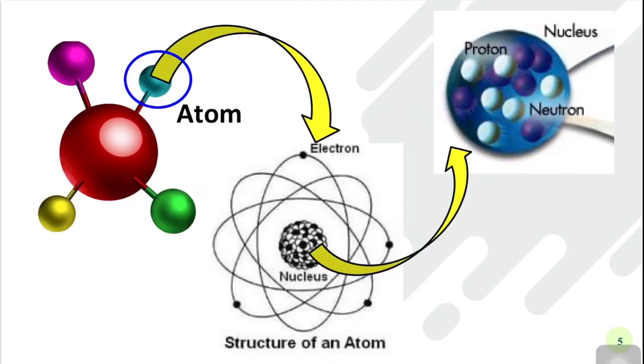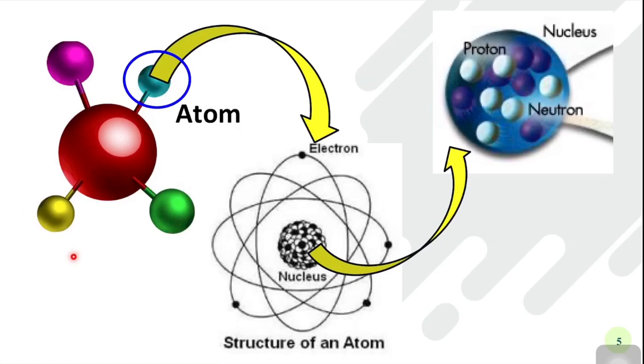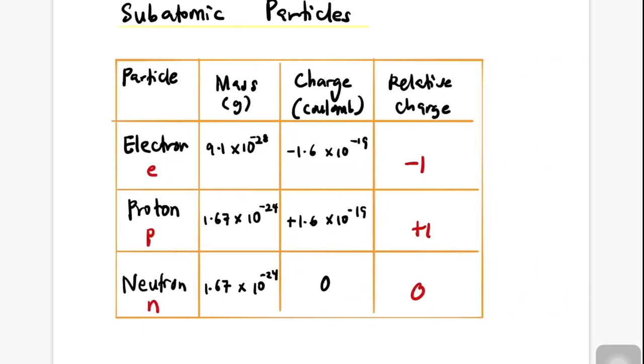Atoms consist of three subatomic particles: electrons which freely move around the nucleus, and inside the nucleus we have two other subatomic particles which are protons and neutrons.